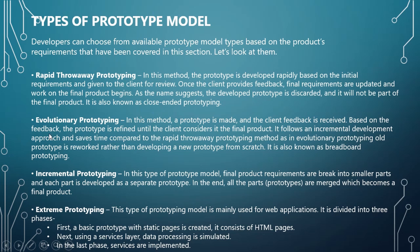The next type is evolutionary prototyping. In this method, a prototype is made and client feedback is received. Based on the feedback, the prototype is refined until the client considers it the final product. It follows an incremental development approach and saves time compared to rapid throwaway prototyping, as the old prototype is reworked rather than developing a new prototype from scratch. It is also known as breadboard prototyping.